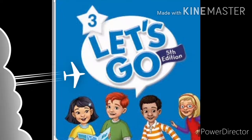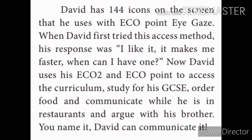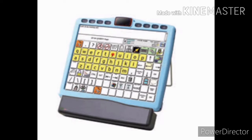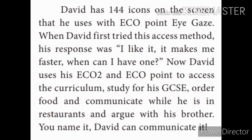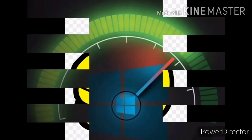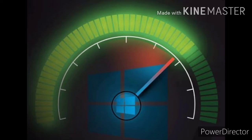David has 144 icons on the screen that he uses with EcoPoint eye gaze. When David uses EcoPoint eye gaze, there are 144 visible icons on the screen. When David first tried this access method, his response was: 'I like it. It makes me faster. When can I have one?' David liked this access method very much even at his first attempt.